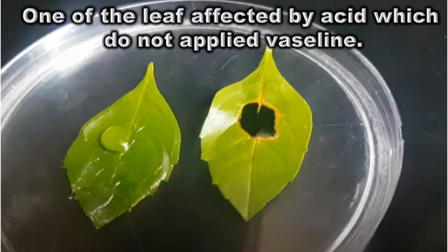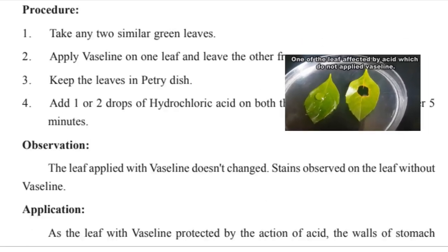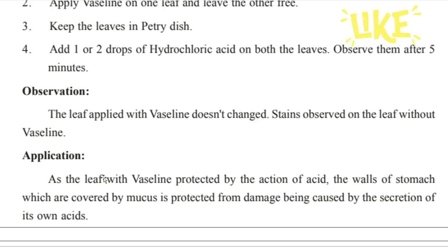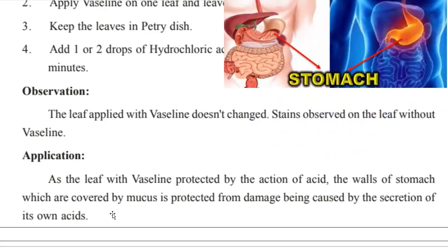Observation: The leaf applied with vaseline does not change or get affected. But on the leaf without vaseline, we can see stains — the acid is absorbed on it. Application: Just as the leaf with vaseline is protected from the action of acid, the walls of the stomach, which are covered by mucus, are protected from damage caused by the secretion of its own acids.